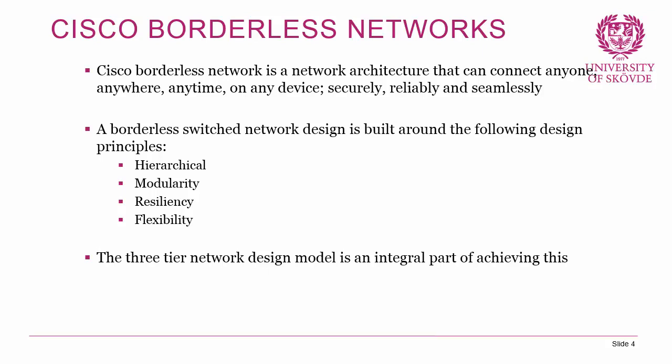We can easily add or remove functions to the network and expand in the area that needs it. Resiliency means we have a network that can withstand errors and provide a good uptime. Flexibility means the network should be able to grow in size and be flexible in how users can access it. These design principles are achievable goals, though cost is always a factor pulling them back — aiming for the highest possible hierarchy, modularity, resiliency, and flexibility can be expensive.